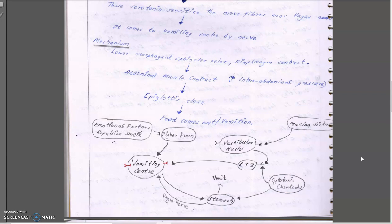The diaphragm contracts, abdominal muscles contract, and intra-abdominal pressure increases. The epiglottis closes so that the propulsed food will not go to the lungs and will not create aspiration pneumonia. The food comes out — that is what we call vomition.